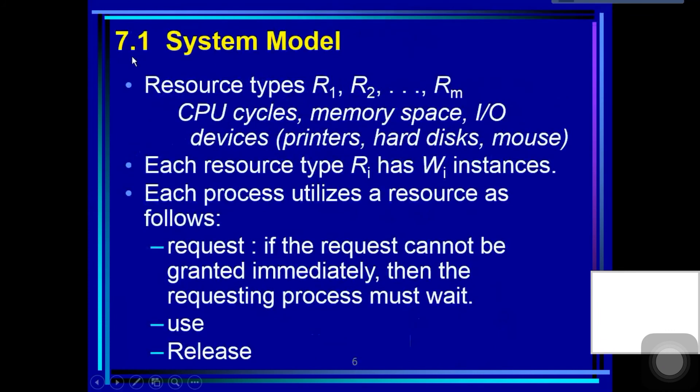Section 7.1: System Model. A system consists of a finite number of resources to be distributed among competing processes. The resources may be partitioned into several types, each consisting of some number of identical instances.